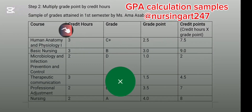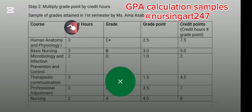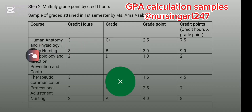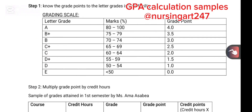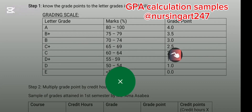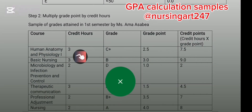Let's look at a sample of grades attained in first semester by Miss Amasabia — please note, this name and these grades are just for teaching purposes and are not for any particular person. In first semester, Human Anatomy and Physiology 1 is three credit hours, and Amasabia got C+. Coming back to check the grade points, C+ is 2.5.